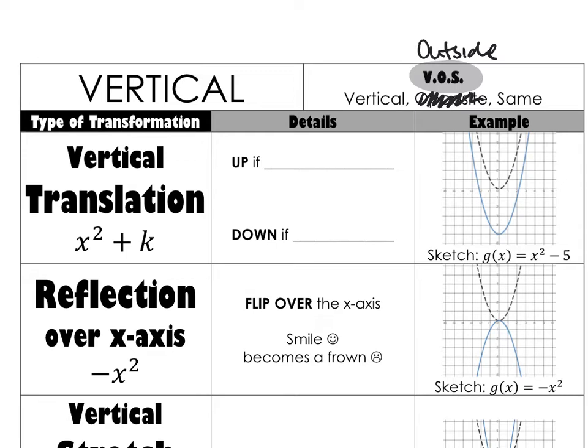So a vertical translation, if you remember back to when we did this with absolute values, was just adding some number at the end. If you actually add that number, so plus k or plus 5, whatever you're adding, that's going to move the parabola, the shape, the U, up. It's going to take the vertex, which is the bottom of the graph, and move it up. If you subtract some number k, it's going to move it down, which makes sense because up is plus and down is minus.